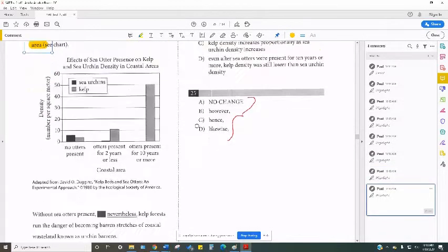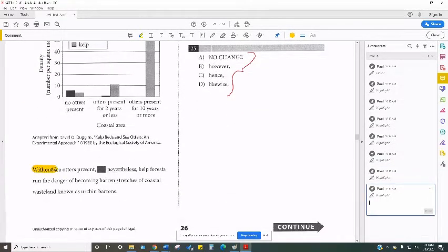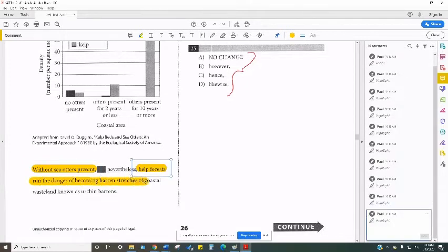See the chart. Without sea otters present, kelp forests run the danger of becoming barren stretches of coastal wasteland known as urchin barrens. So we have to determine if they're similar or different.